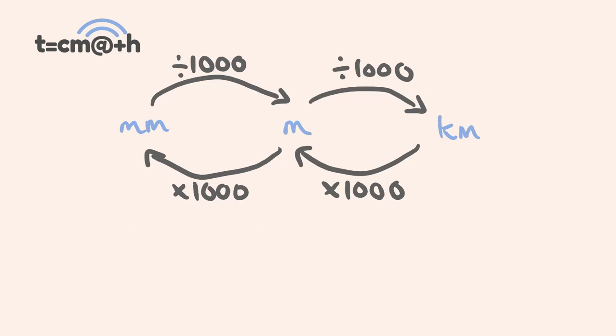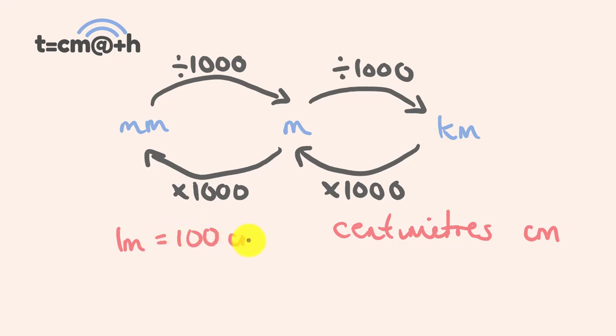But there is one type of unit I've missed, and I'm going to talk about that right now. We've moved back to length units, because there's a particular unit I haven't talked about yet — centimeters, written as cm. Centimeters are a little bit different, because everything we've done so far has been dividing or multiplying by 1,000. But in 1 meter, it is equal to 100 centimeters, and 1 centimeter is equal to 10 millimeters.